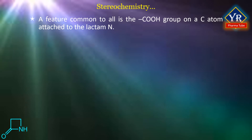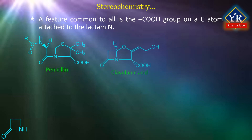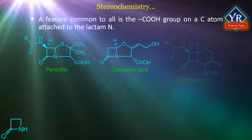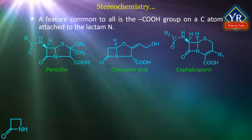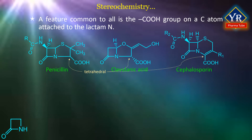In those systems, i.e. penicillins, clavulanic acid, and two cephems, where the carbon atom carrying the carboxyl group is tetrahedral, the absolute configuration is S, placing the carboxyl on the alpha side of the ring system.